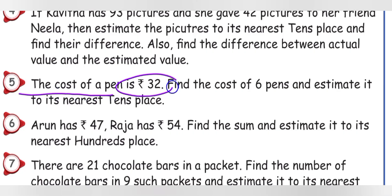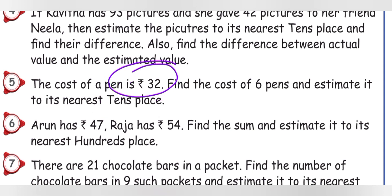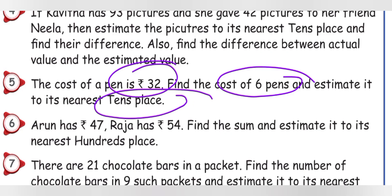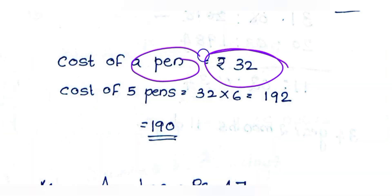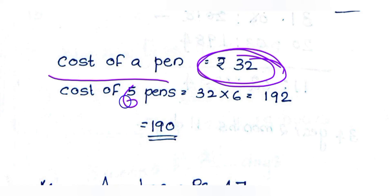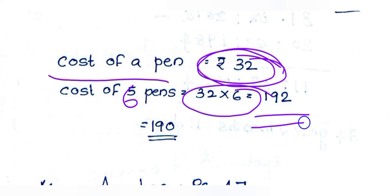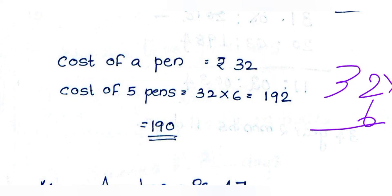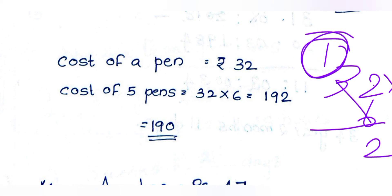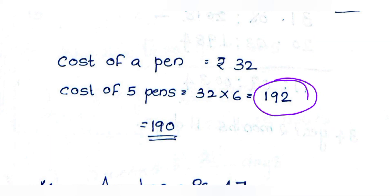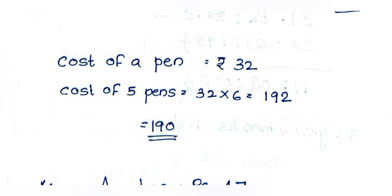Next: The cost of a pen is Rs. 32. Find the cost of 6 pens and estimate it to the nearest tens place. Actual cost: 32 × 6 = 192. Estimated: 192 — ones place is 2, less than 5, so round down: 9 tens stays 9 tens, giving 190. So estimated cost of 6 pens is Rs. 190.